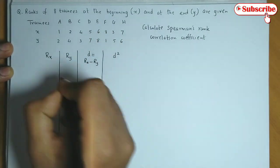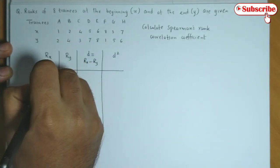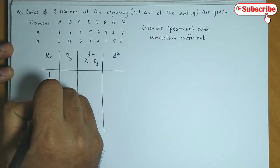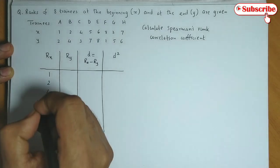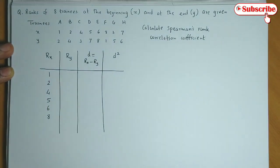So the Rx values are 1, 2, 4, 5, 6, 8, 3, 7.